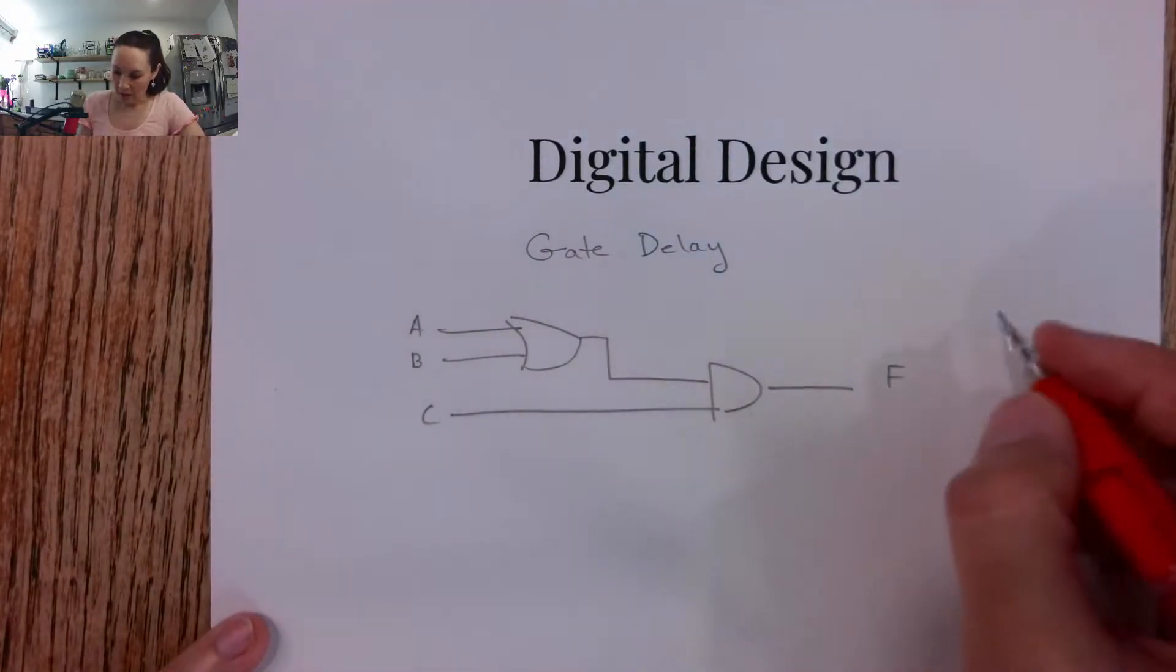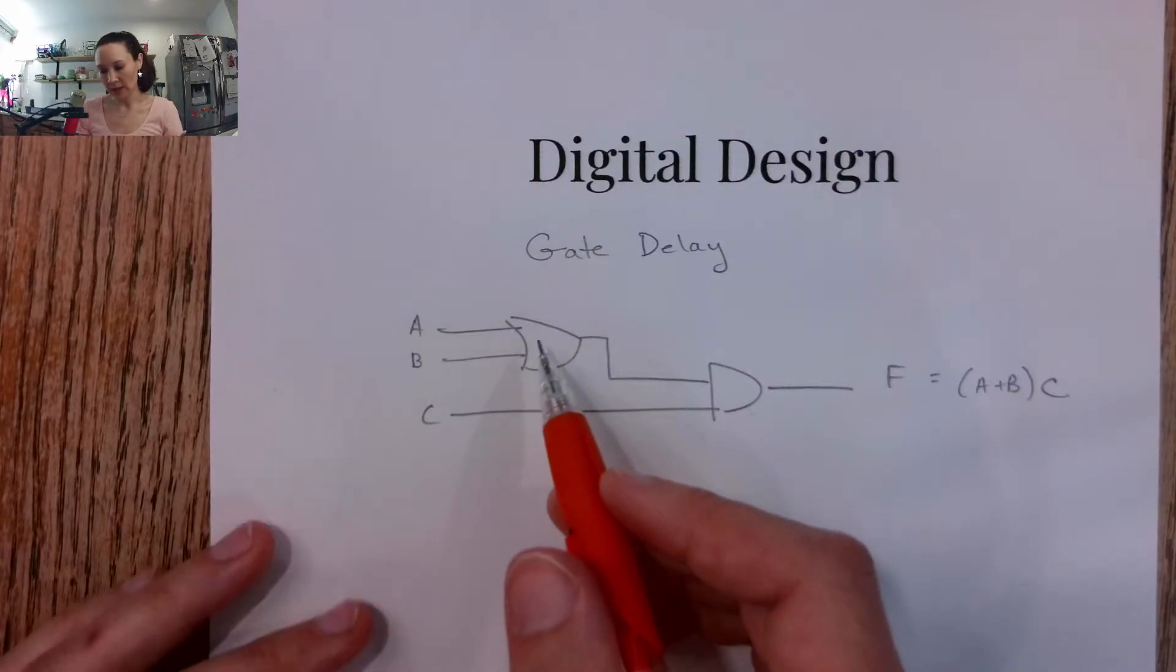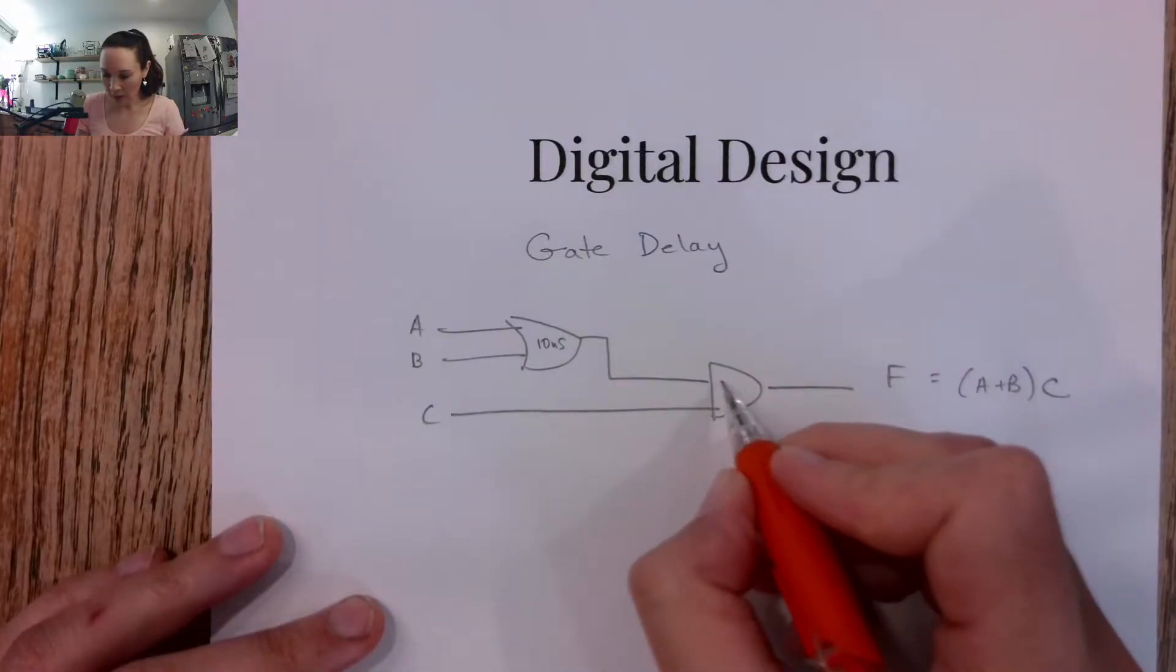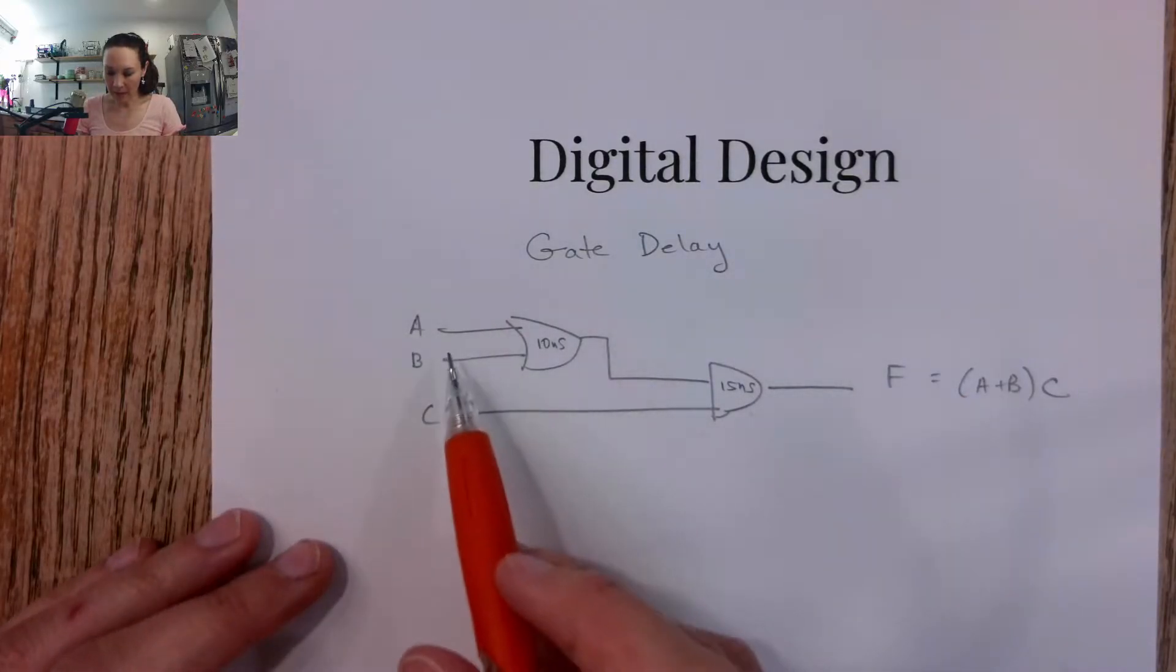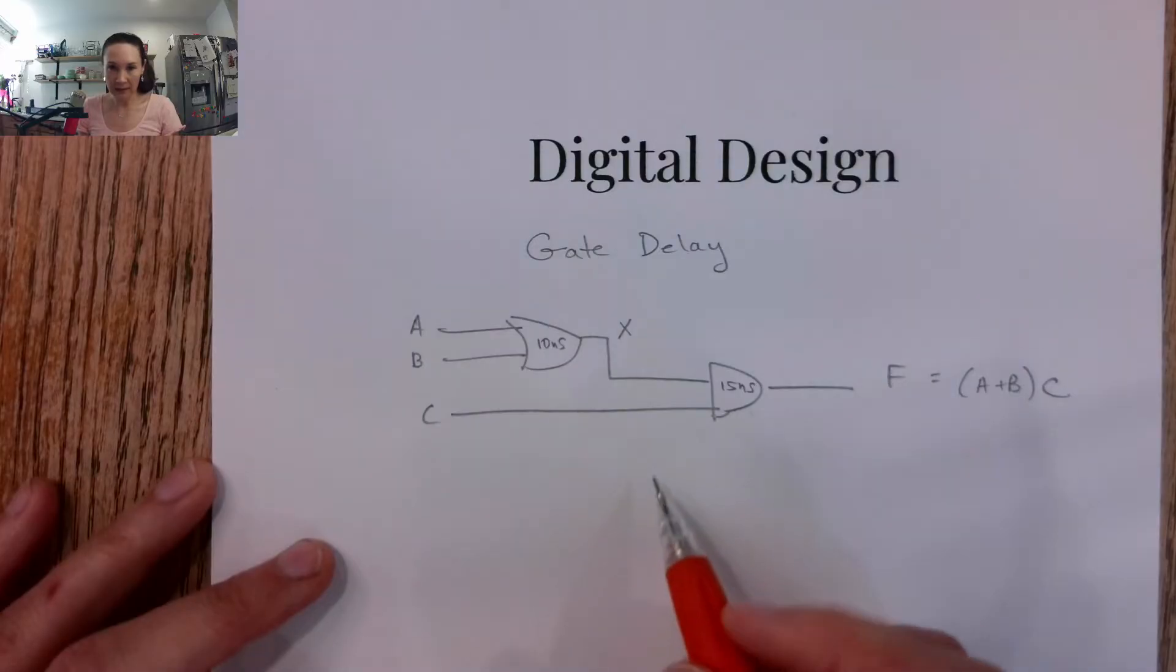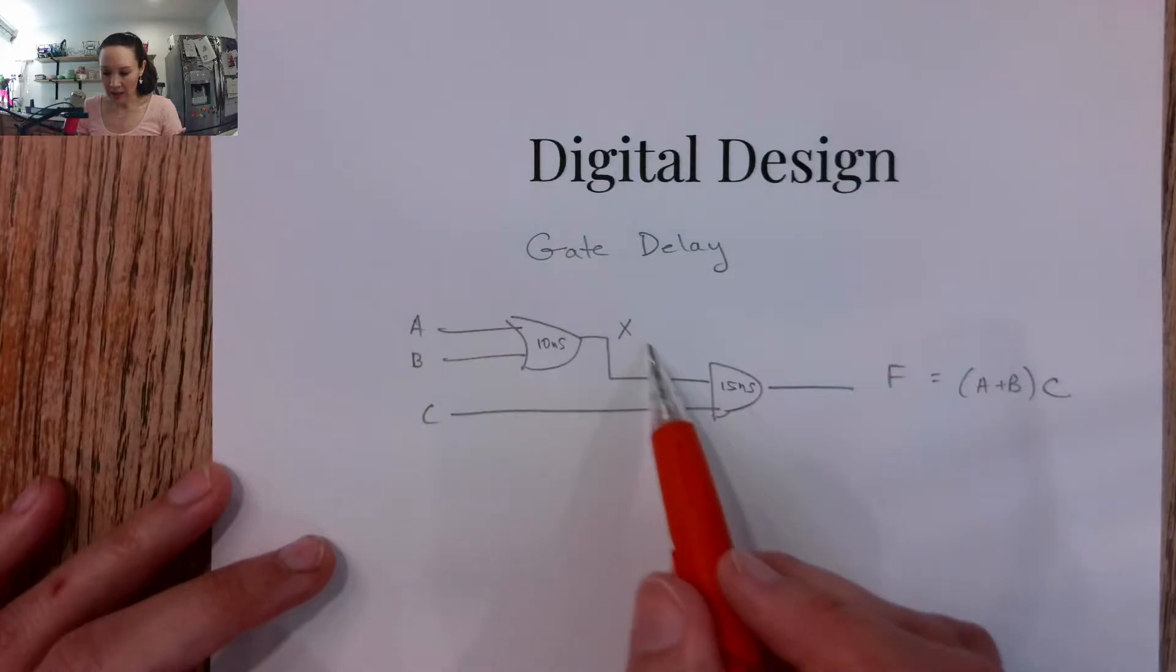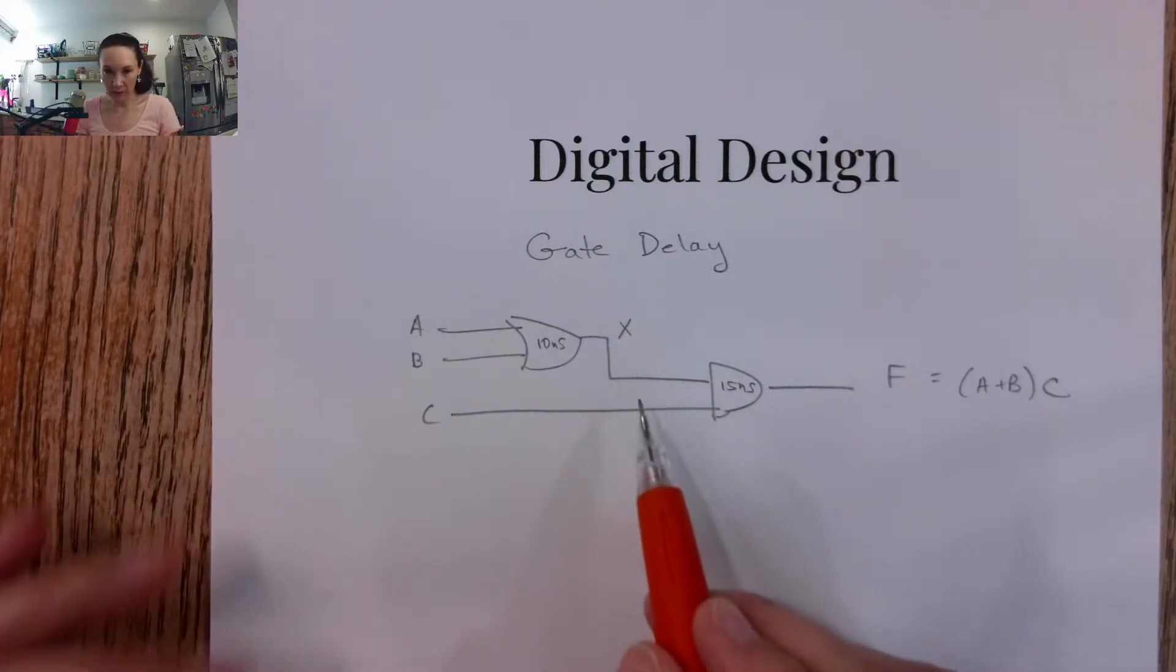This would be A OR B ANDed with C. Suppose the time it takes for this OR operation to complete is 10 nanoseconds, and the time for this AND operation to complete is 15 nanoseconds. If we go through this OR, and let's say our output is X, this X is going to be invalid for the first 10 nanoseconds of using this circuit. After 10 nanoseconds, now this result X is ready to go into the AND, but the whole time C has been waiting for X.